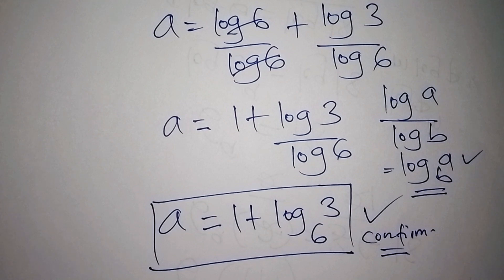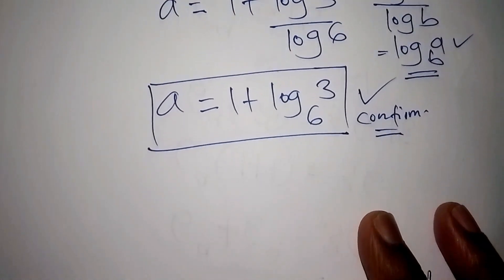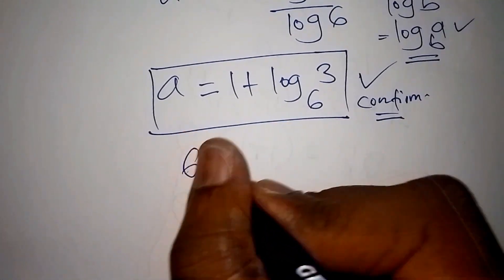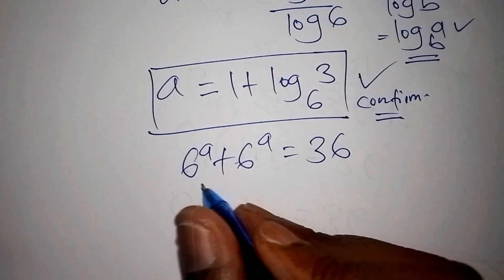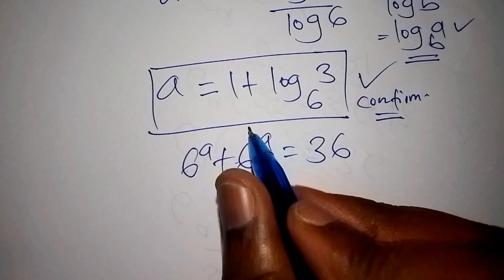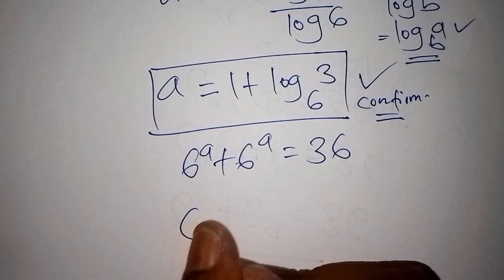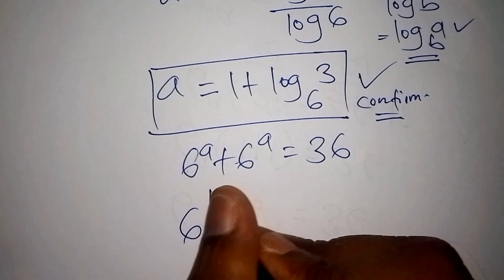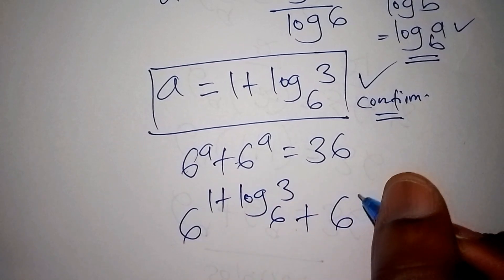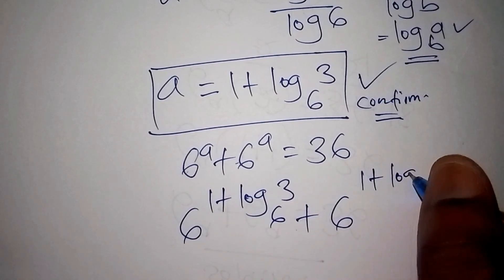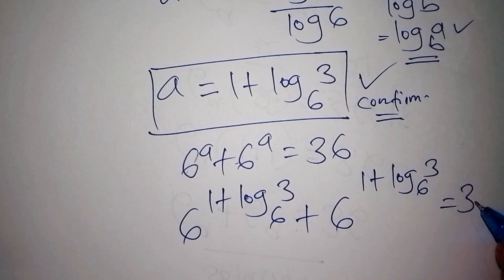This was the math problem we had: 6 to the power of a plus 6 to the power of a plus 6 to the power of a is equal to 36. Replacing a with 1 plus the log of 3 to the base of 6, we have 6 to the power of (1 plus log₆3), repeated, and all of them should give us 36.